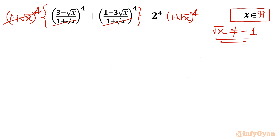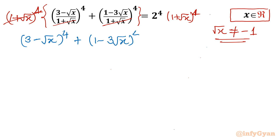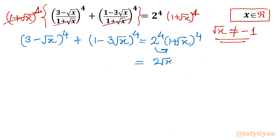After canceling, what we get is: the first term is (3 minus root x) whole power 4, plus (1 minus 3 root x) whole power 4. On the right hand side I will write 2 to the power 4 times (1 plus root x) whole power 4. Now I can bring the 2 inside the bracket, so I can write (2 root x plus 2) whole power 4.